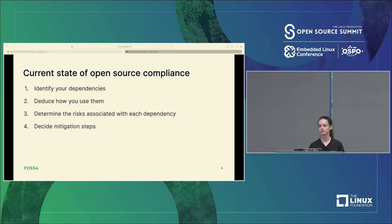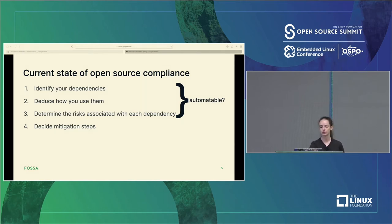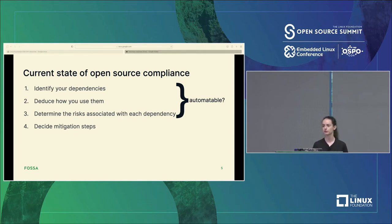So what if we could automate some of this process? The good news is that we can, and I hope many of you already are. The first three steps — identifying your dependencies, how they're used, and the risks associated with each one — are what is easier to automate. The fourth step, actually knowing what you need to do about all of this information, you still want an engineering professional or a legal professional to look at it and make that final decision.